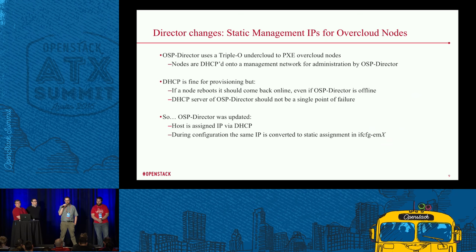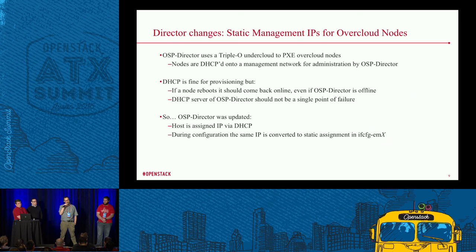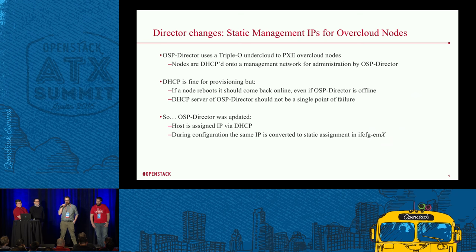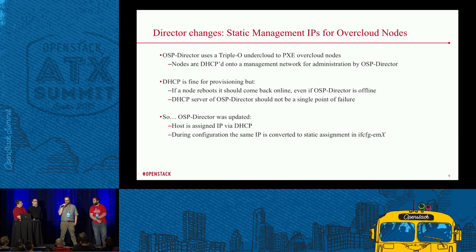DHCP is fine for provisioning and you're going to want that when you're doing PXE. But Rackspace had a requirement that if a node reboots, it should come back online even if director is offline. There are other static IP assignments — I'm just talking about the management network. You could, in the heat template for director, configure several static IPs. They had a specific requirement for the management network to have static IPs. The solution is that when the system boots to be provisioned, DHCP is used to hand it an IP address and the system is installed and imaged. But during configuration later, the deployed node's ifconfig file is modified to have a static IP.